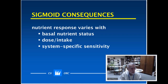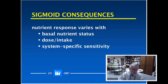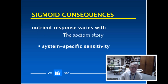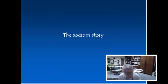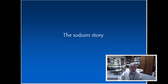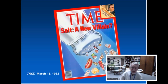To wrap up this point: nutrient responses vary with basal status, with the dose or intake of the nutrient, and with the body system being evaluated — each one specific with a different sensitivity. These are important because if studies didn't pay attention to these things, you may well get an answer saying a nutrient doesn't have much effect, which would be totally wrong. Another example of the troubled relationship is the sodium story, revisited just this past year. In May of 2013, the Institute of Medicine reissued its recommendations for dietary sodium intake and essentially said the previous recommendations published in 2005 were too low, and there was no evidence that going down there produced any benefit at all.